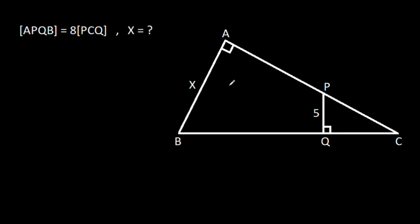In this video we have been given that angle BAC is 90 degrees, angle PQC is 90 degrees, and area of APQB is 8 times area of PCQ. PQ is 5, AB is X, then we have to find X.